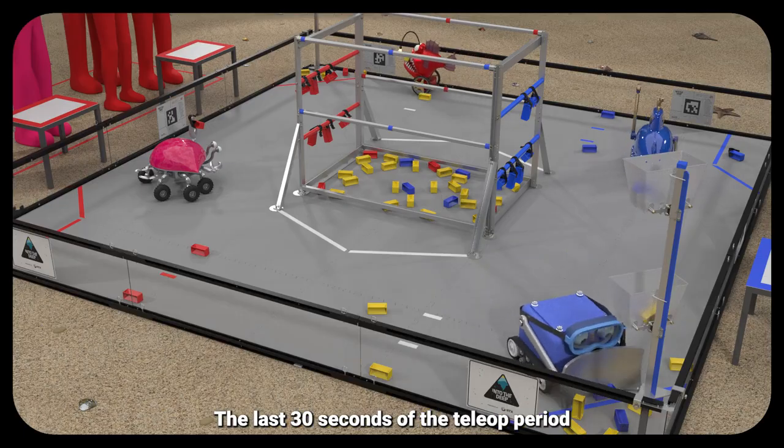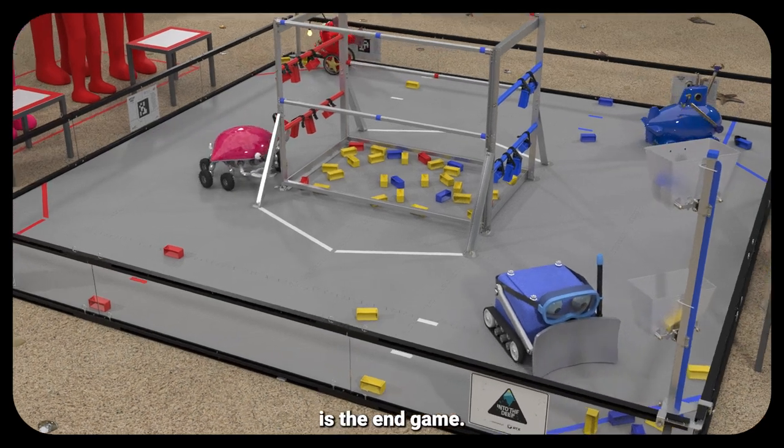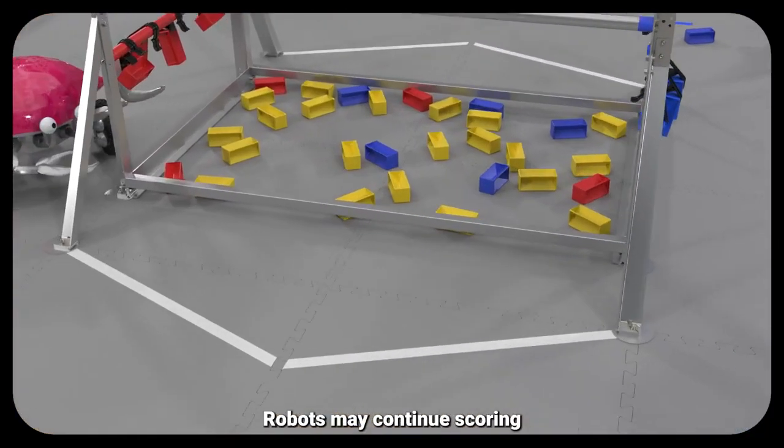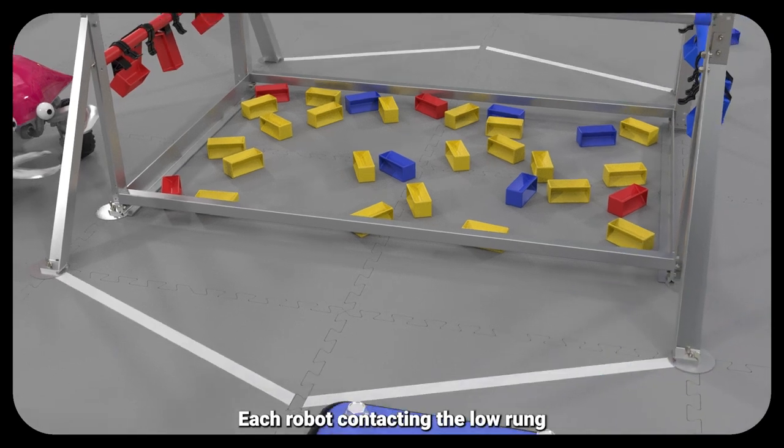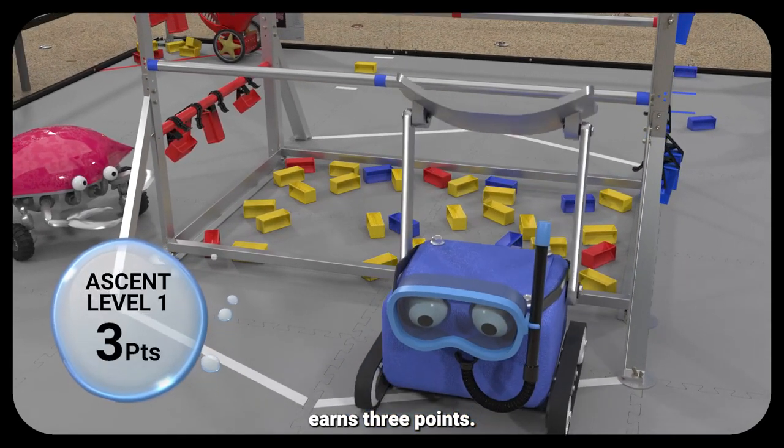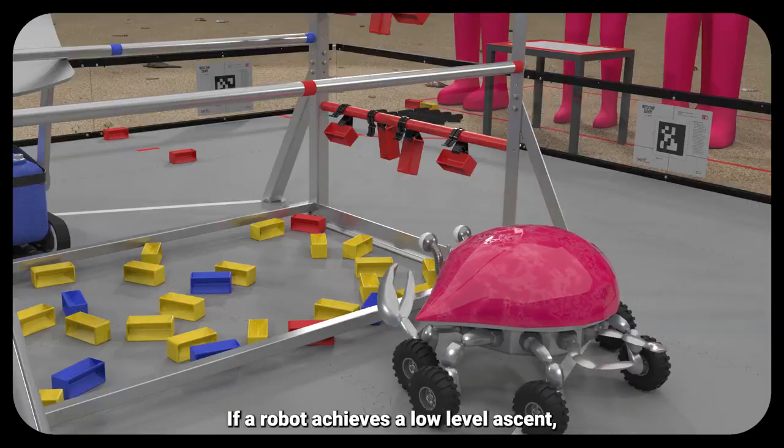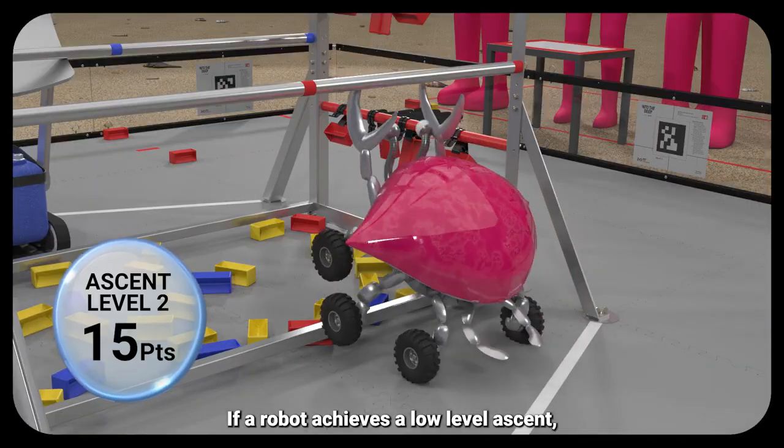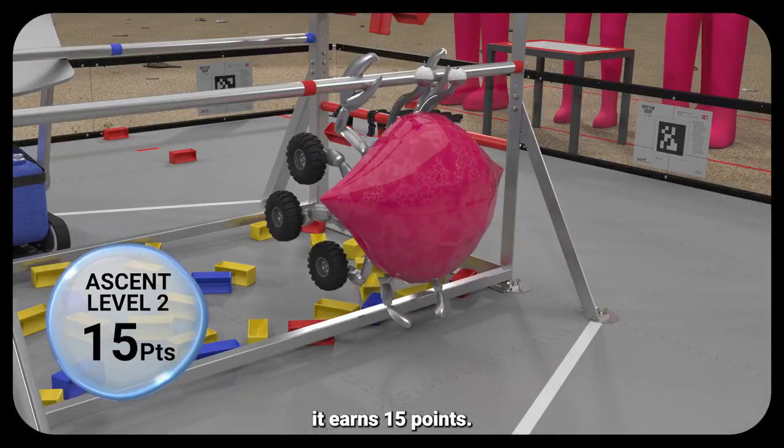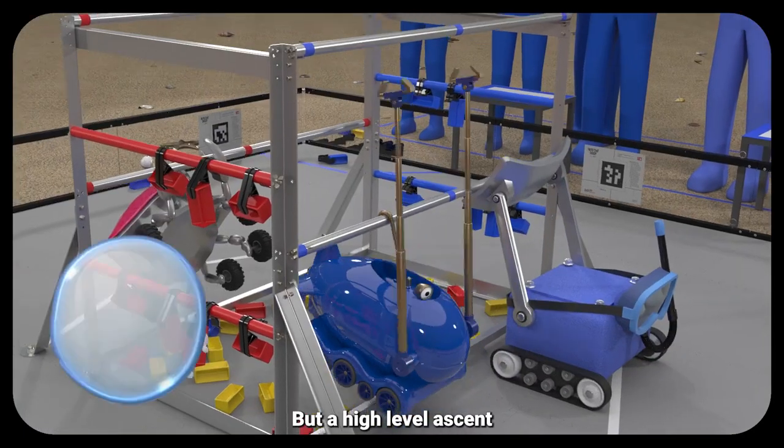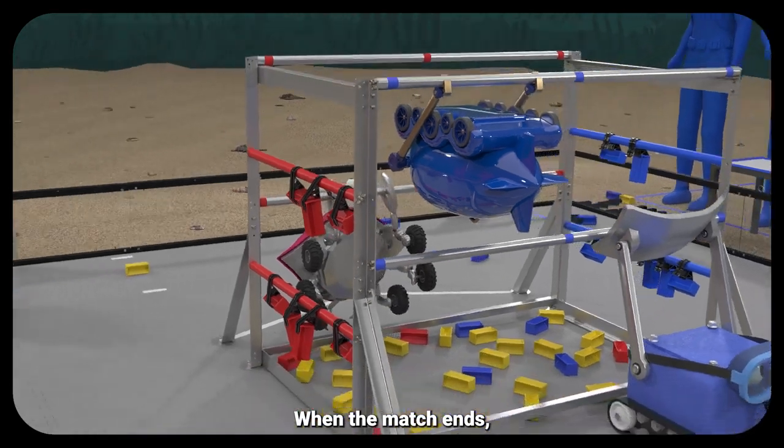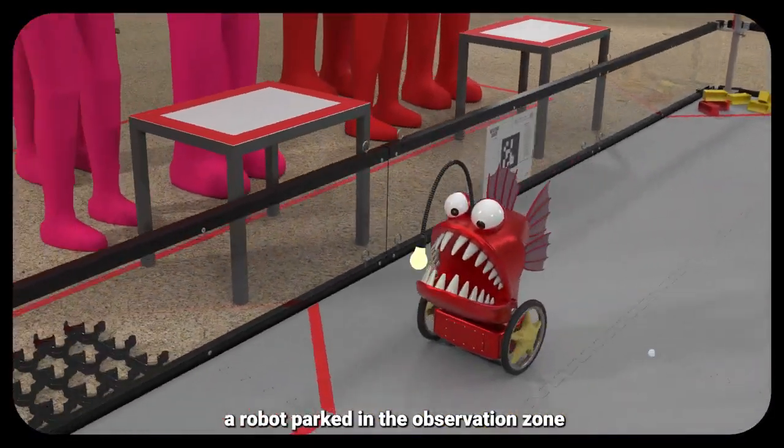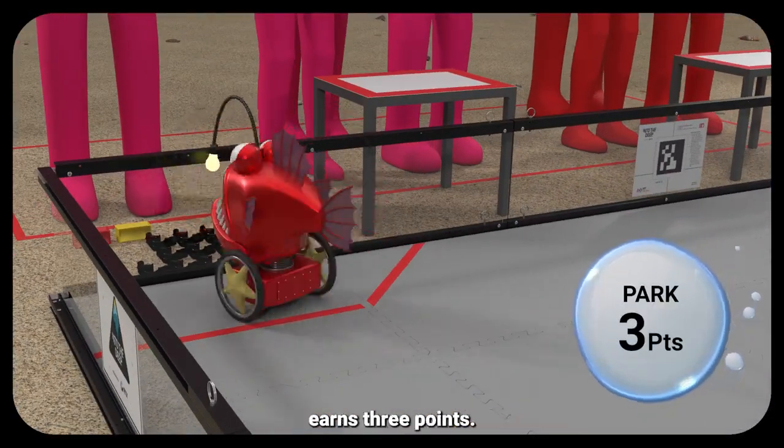The last 30 seconds of the teleop period is the endgame. Robots may continue scoring but have protected access to their ascent zones. Each robot contacting the low rung earns 3 points. If a robot achieves a low-level ascent, it earns 15 points, but a high-level ascent earns 30 points. When the match ends, a robot parked in the observation zone earns 3 points.